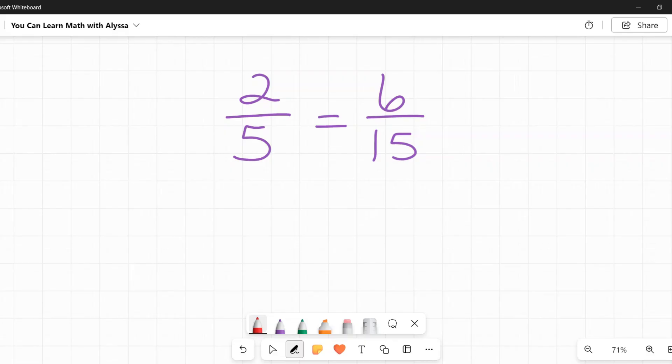Cross multiplying says that if I have two fractions that are equal to each other, I can connect the numerator and denominator of opposite fractions, and when I multiply those numbers that are connected together, they will be equal to each other. By which I mean 2 times 15, multiply those together, I get 30, then 5 times 6, I multiply those together, I also get 30.